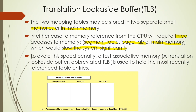The solution is the Translation Look-aside Buffer, or TLB. To avoid this performance penalty, a fast associative memory called a Translation Look-aside Buffer, abbreviated TLB, is used. The TLB holds the most recently referenced table entries.